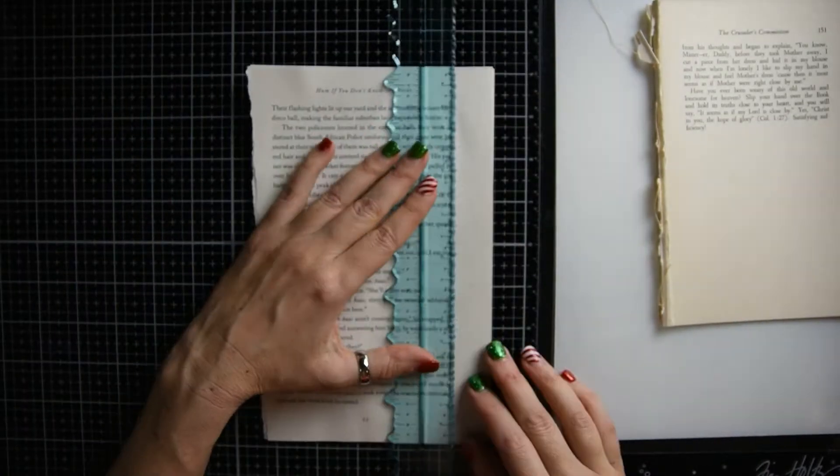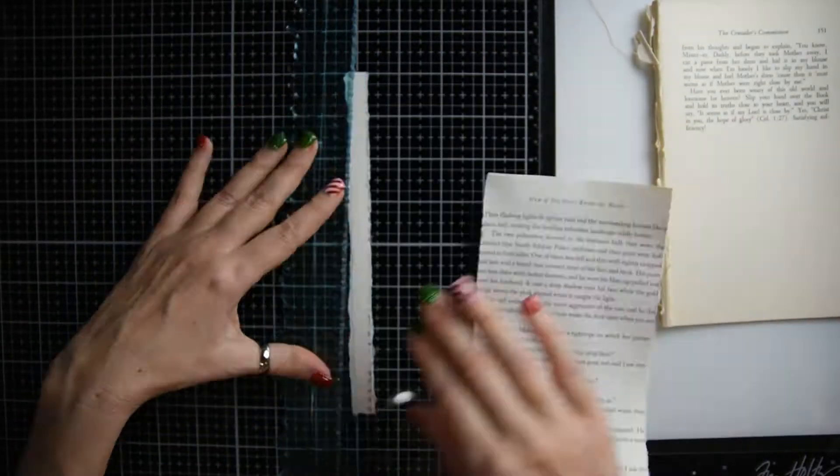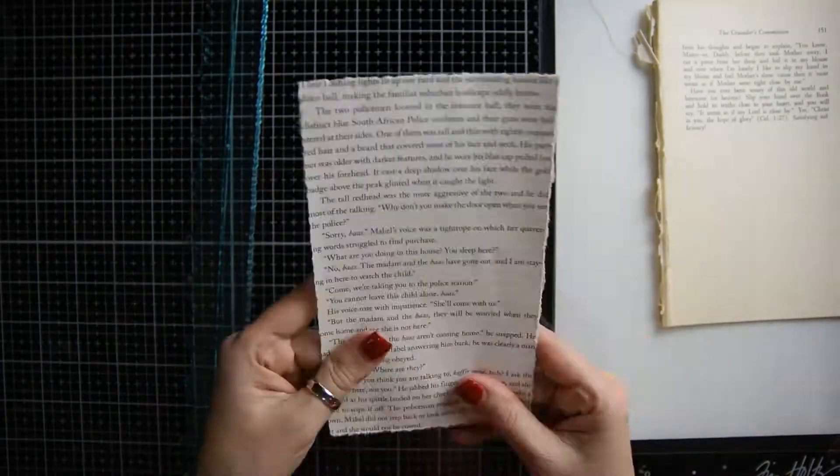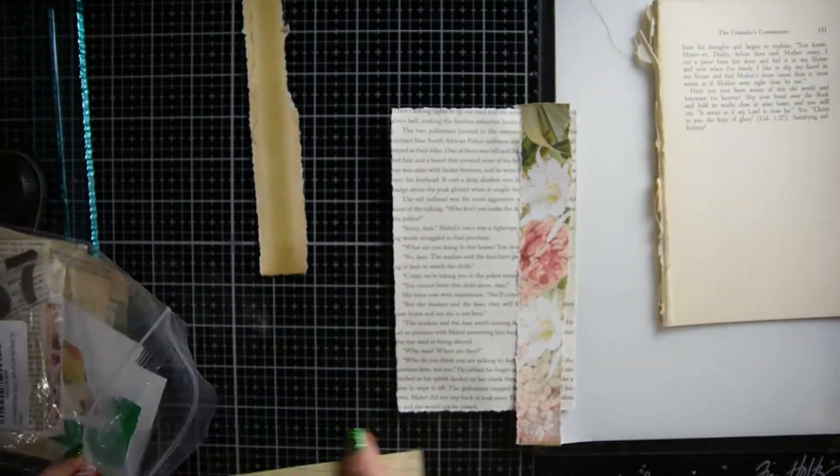And now I'm gluing two pieces of book page together using my tear ruler to tear off the sides where there isn't any text, and I'm going to do simple collage to create a journaling card.